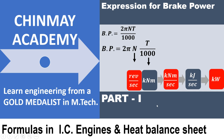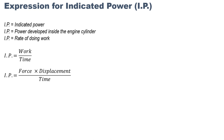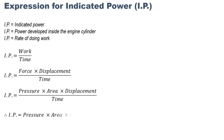In this video we'll try to understand the various formulas and how to balance units in case of IC engines. Let us start with indicated power. Power is developed inside the engine cylinder and is the rate of doing work — that is work upon time. Work equals force into displacement, and force is pressure into area, so this becomes pressure into area into displacement into one upon time.